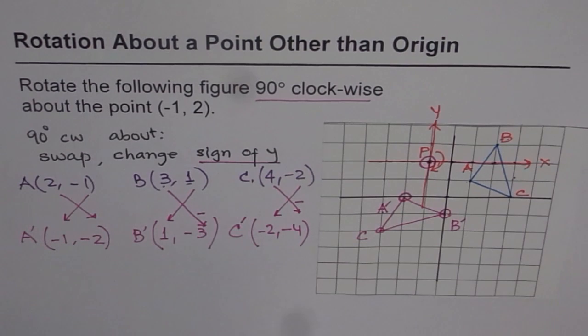That means swap or change X and Y and change the sign for Y. You will get your figure. Do you see that? So that is how we can always rotate a figure about any point. I hope you appreciate this method. Thank you and all the best.